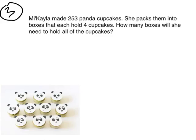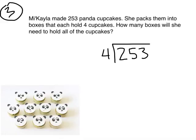Let's do one more question together before you try a few on your own. Mikayla made two hundred fifty-three panda cupcakes. She packs them into boxes that each hold four cupcakes. How many boxes will she need to hold all of the cupcakes? Mikayla is splitting two hundred fifty-three cupcakes into boxes that each hold four cupcakes. Where should you start your division problem? With two hundreds, twenty-five tens, or two hundred fifty-three ones? You should start dividing in the tens place at twenty-five tens. I don't have enough hundreds to split them into four groups.